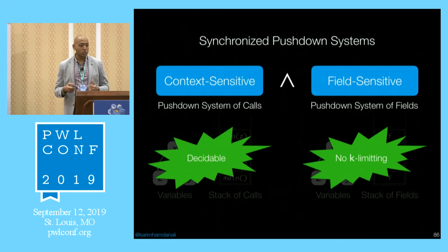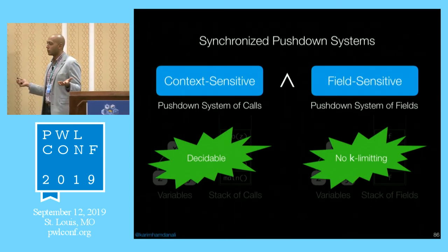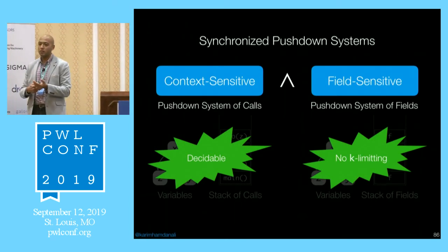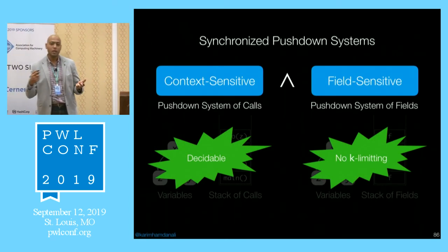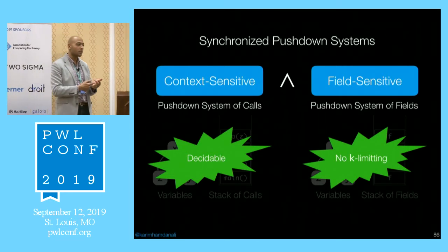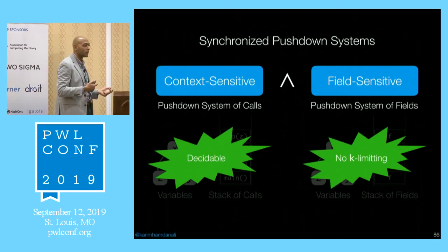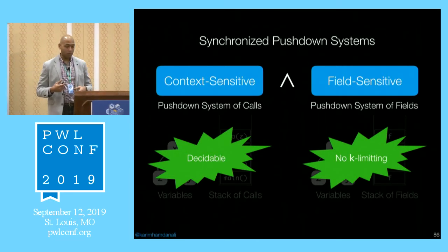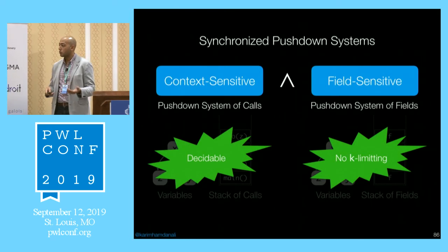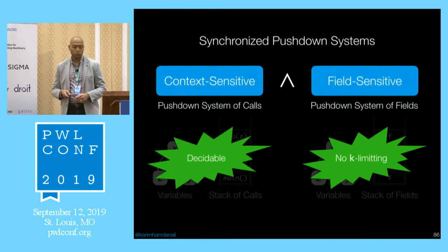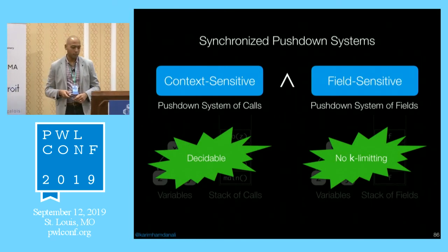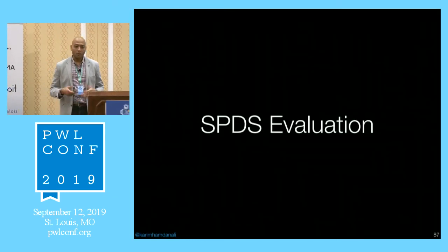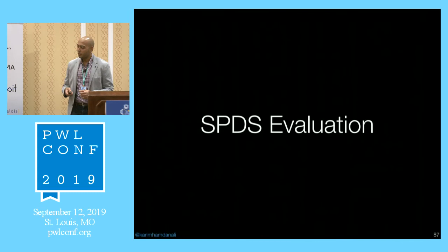So now we have an analysis that is decidable — we worked around undecidability by having two separate pushdown systems that we intersect. Most importantly, there is no k-limit anymore. I don't have to worry about what value of k to choose or get imprecise results from choosing too small a value.